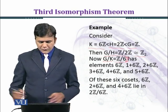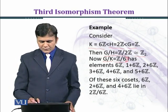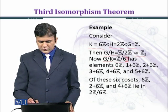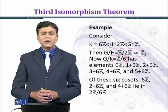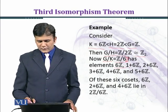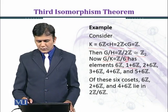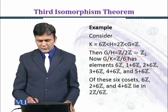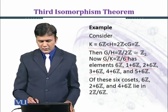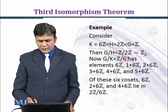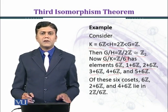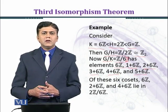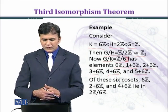Z over 6Z has elements of the form: 6Z, 1 plus 6Z, 2 plus 6Z, 3 plus 6Z, 4 plus 6Z, and 5 plus 6Z — because when dividing by 6 the remainders are 0, 1, 2, 3, 4, and 5, giving six cosets in total.